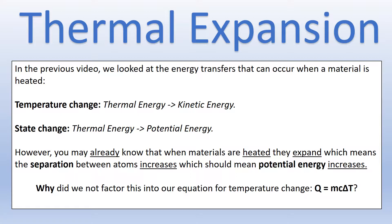You may well already know that when materials are heated they expand, which means the atom separation must be increasing. In the context of what we talked about last time, that should mean the potential energy increases — so our expression for conservation of energy would be wrong. So why did we not include potential energy when calculating temperature change? Why did we assume all the energy would become kinetic energy? That's the question we're going to be thinking about today.